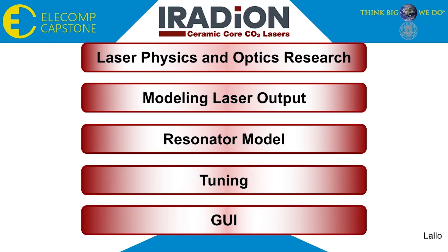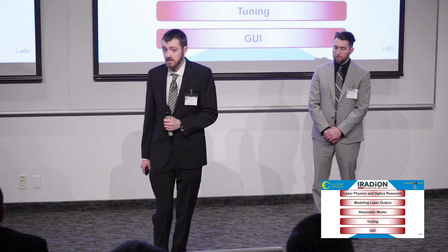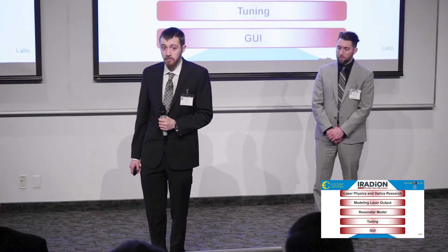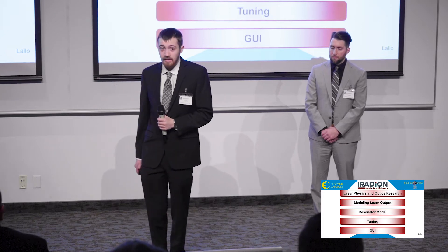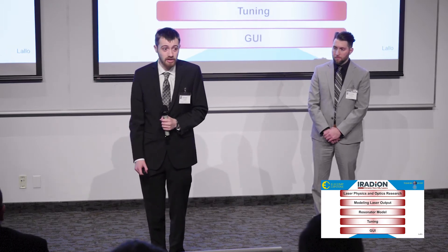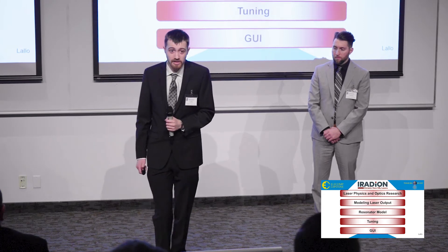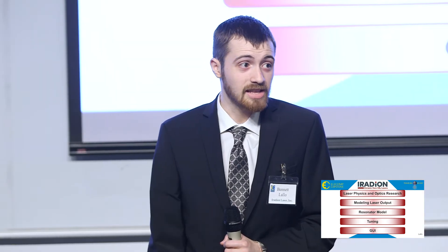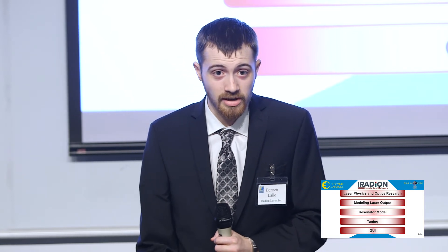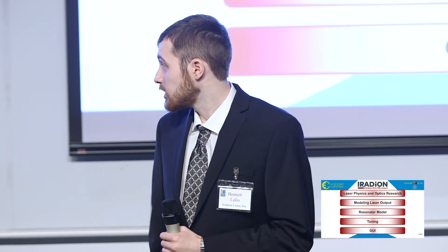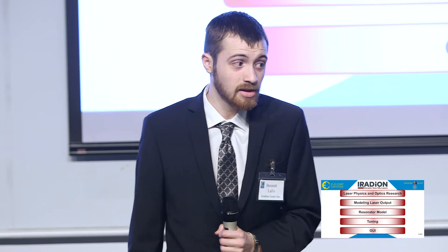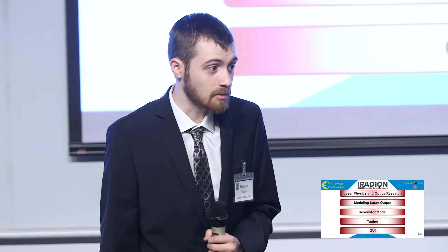Our project had a very long road to it. For the most part, it started with us learning about basic laser physics and optics so that we could understand how to properly model laser output in general. After this, we then worked on modeling the actual laser we were given, which was easily the part of the project that took the most time to complete. Once it was completed, we then had to fine tune the laser's attributes based on actual laser data and then complete the GUI to go alongside it along with the manual. Jonathan will now go into more detail about the resonator model itself.